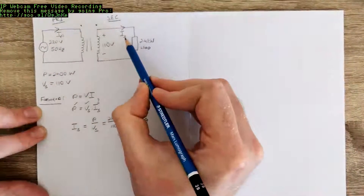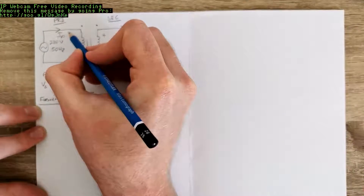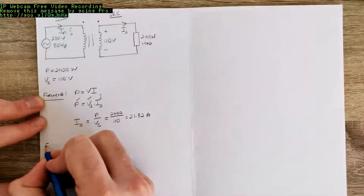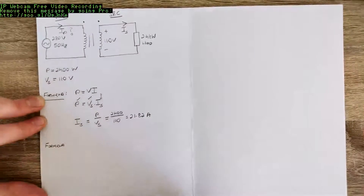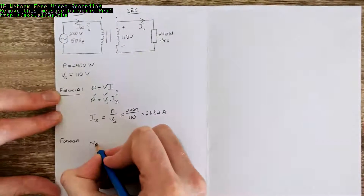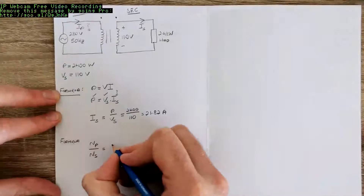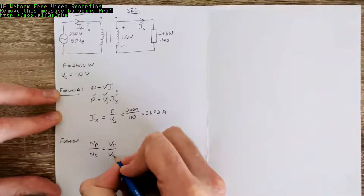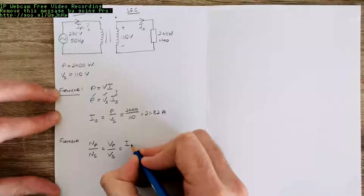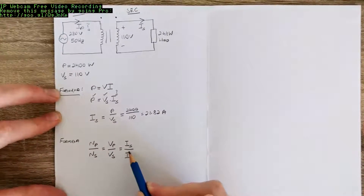So now we have the secondary current in our circuit, but the question is asking us for Ip. To work back to that, we use the relationship for single phase transformers — the turns ratio. The ratio of primary turns Np to secondary turns Ns equals the ratio of primary voltage to secondary voltage, and also equals the ratio of secondary current to primary current. Note that P and S are swapped on that last ratio.